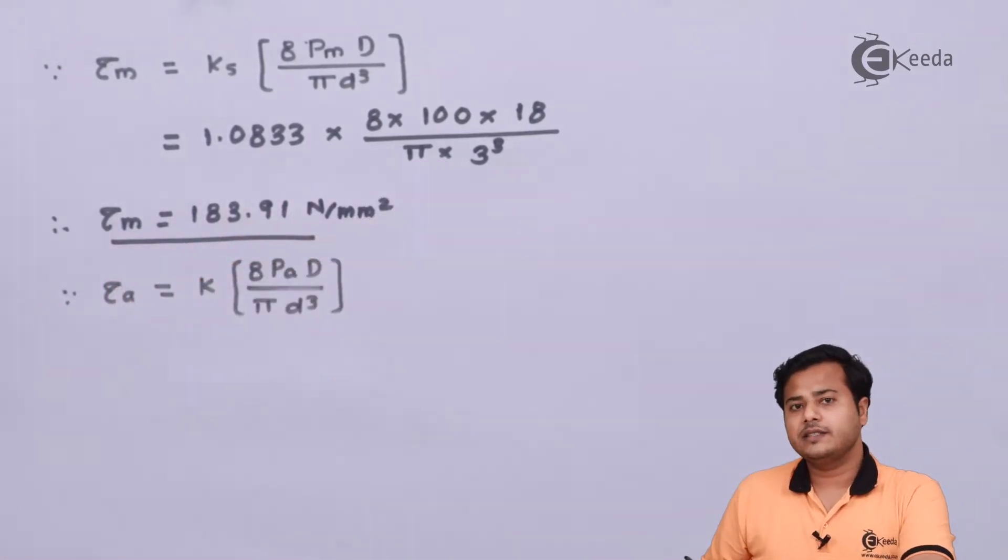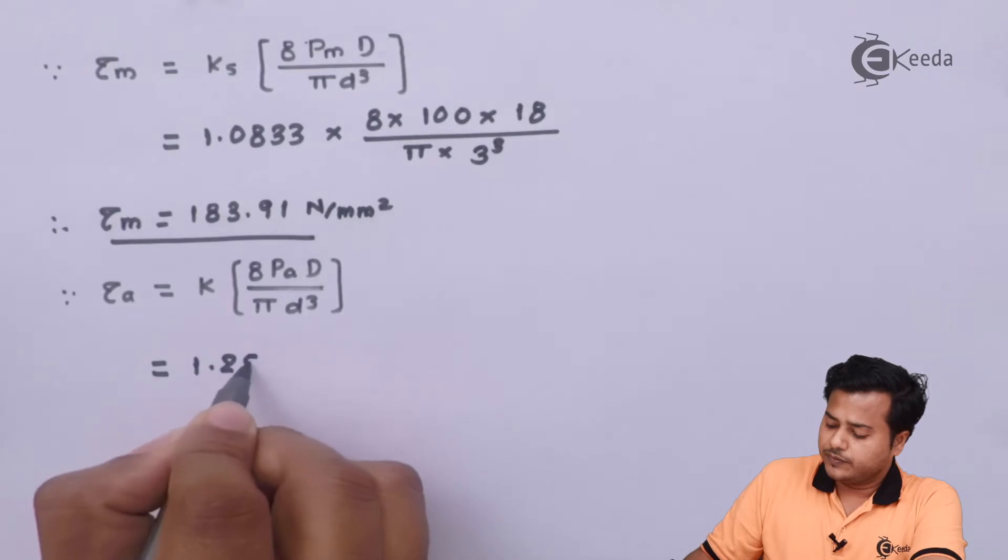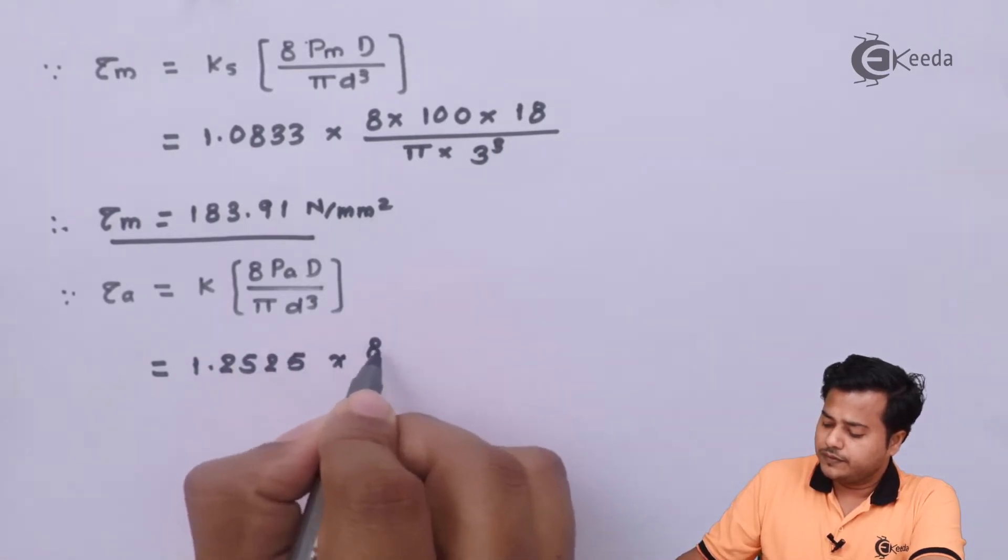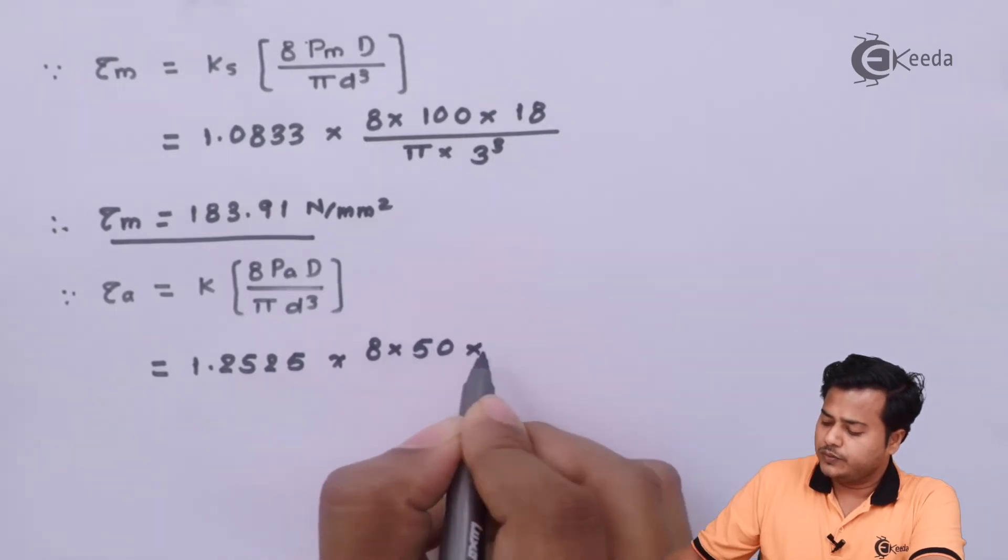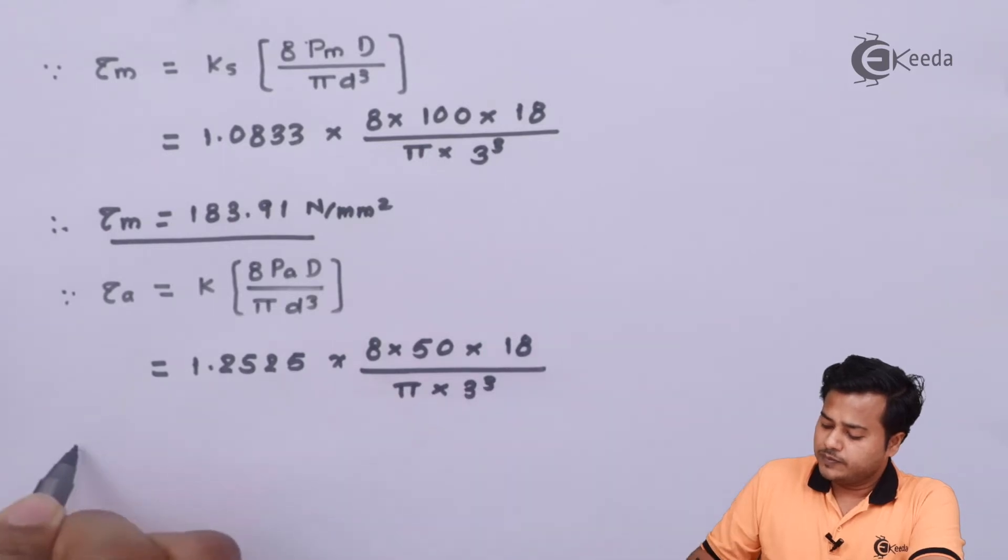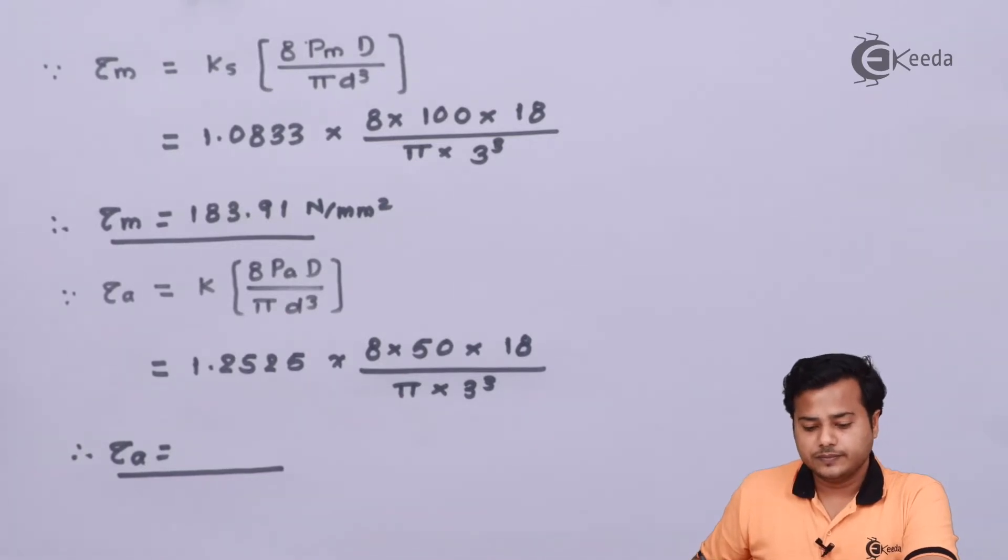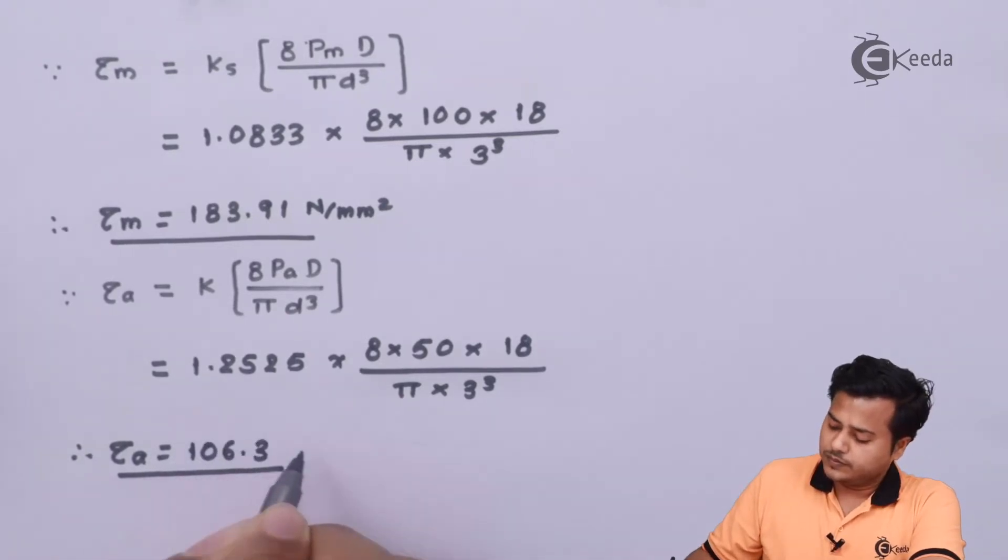The next thing is torsional amplitude stress using the given value, Waal's factor is 1.2525, the amplitude force value. And after solving this, we will get the value somewhere equal to 202 N per mm².